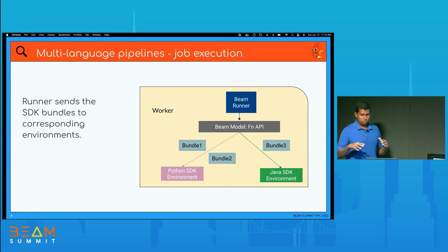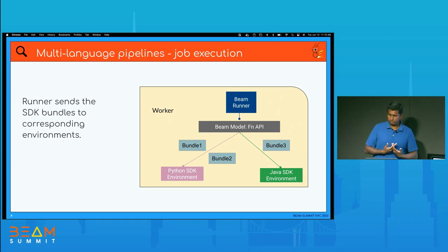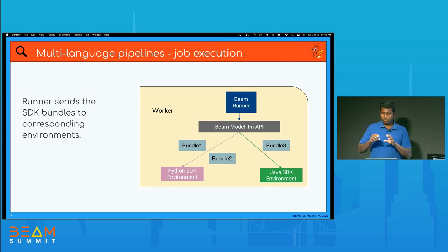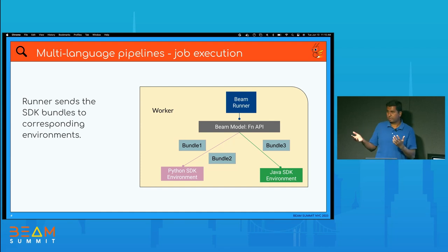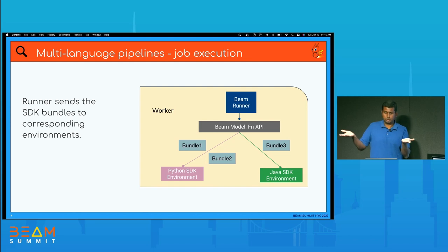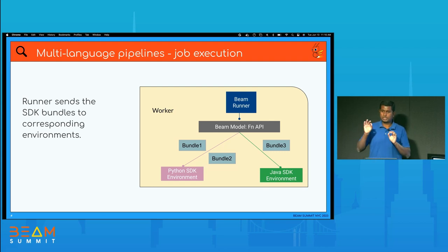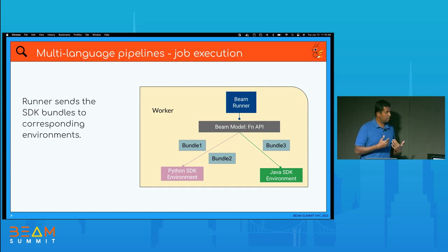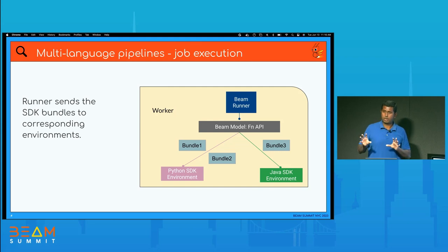For job execution in a worker, the runner sends work to each worker. The runner component within the worker figures out the set of bundles. Bundles are defined so that each bundle needs only one environment. The runner starts up a Python SDK environment as well as a Java SDK environment within each worker. Python bundles are executed by the Python SDK environment, while Java bundles are executed by the Java SDK environment. The runner orchestrates the full execution of the larger pipeline.